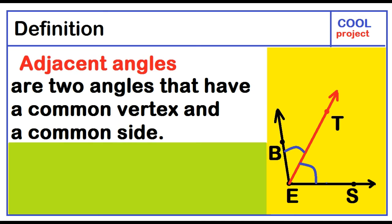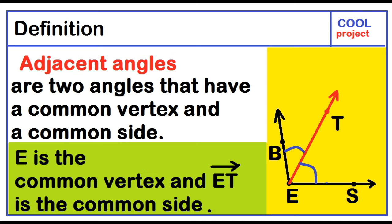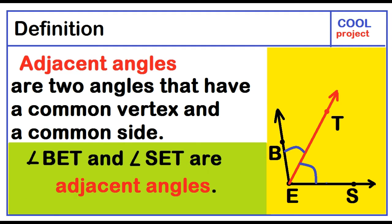Adjacent angles are two angles that have a common vertex and a common side. Point E is the common vertex and ray ET is the common side. Angle BET and angle SET are adjacent angles.